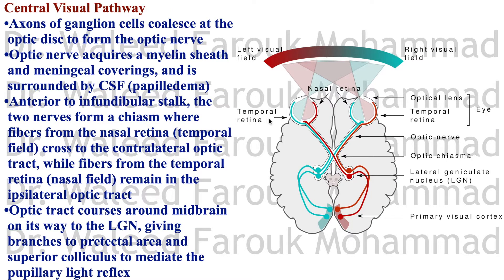After the photoreceptors interact with light and send the nerve impulse through the optic nerve, the optic nerve goes inside the cranial cavity and continues its visual pathway. The axons of ganglion cells coalesce at the optic disc to form the optic nerve. The optic nerve acquires a myelin sheath and meningeal coverings — dura, arachnoid, and pia mater — so it is surrounded by CSF.